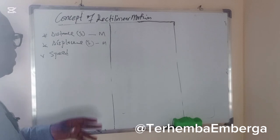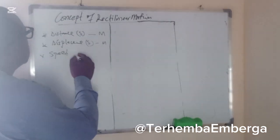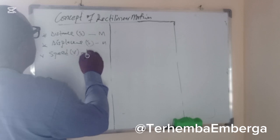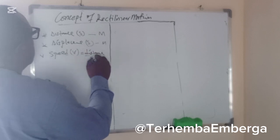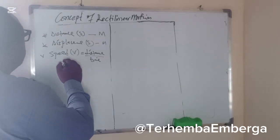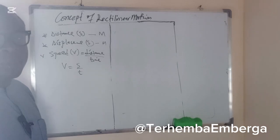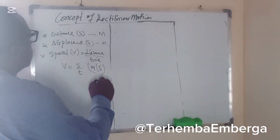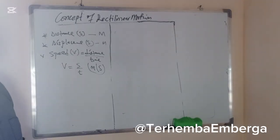We'll talk about speed. Speed is distance over time. So speed, v, is equal to distance over time. Mathematically, we can say that speed is s over t, and the unit is meters per second. It is also a scalar quantity.